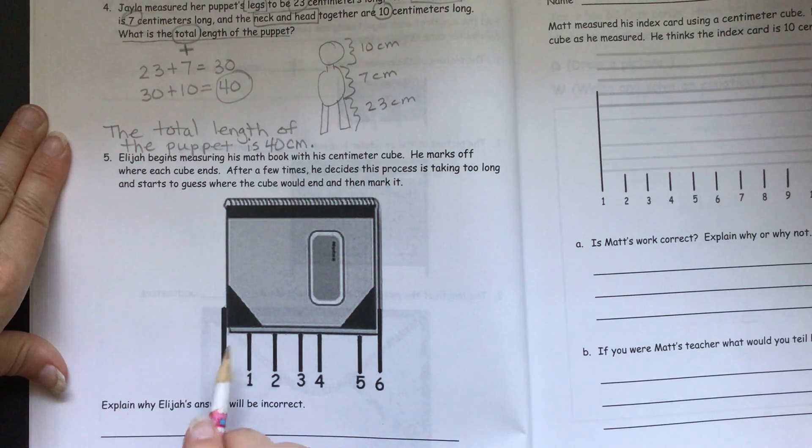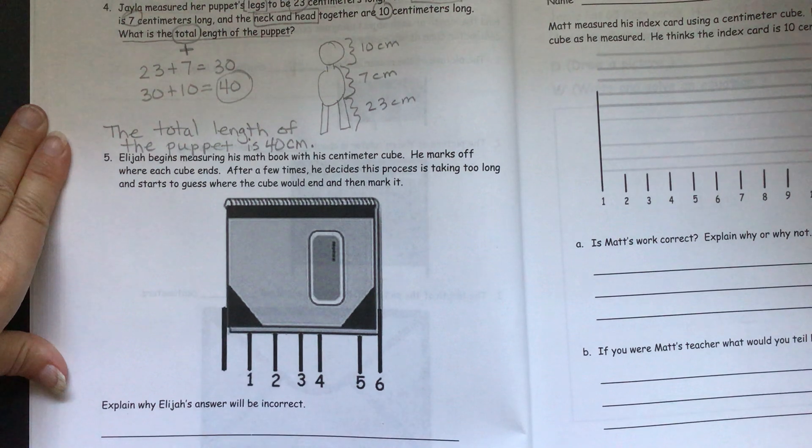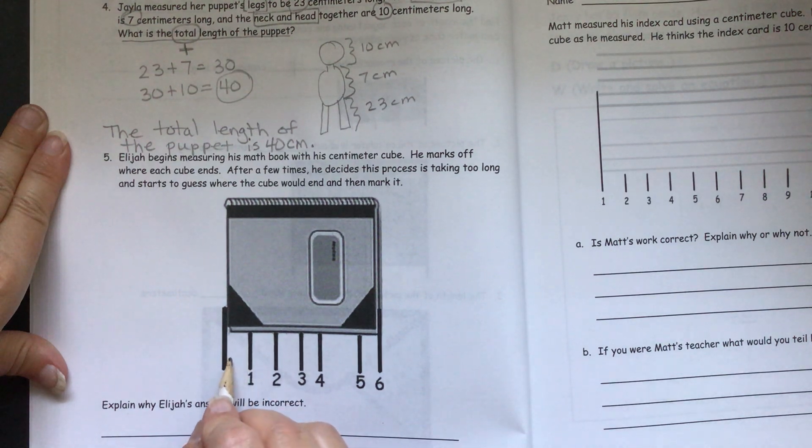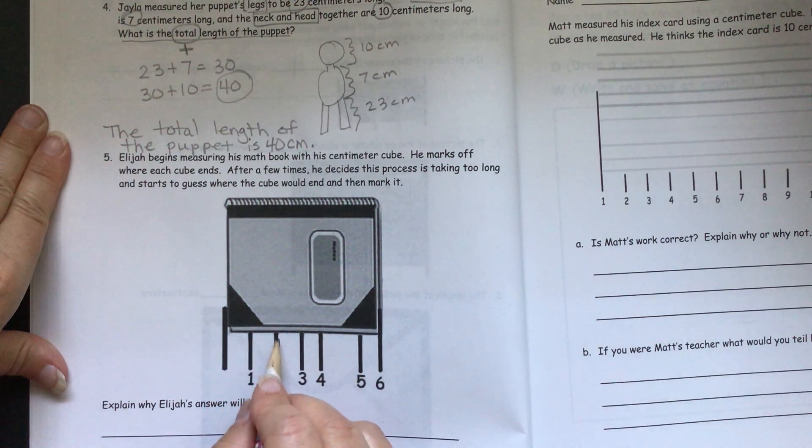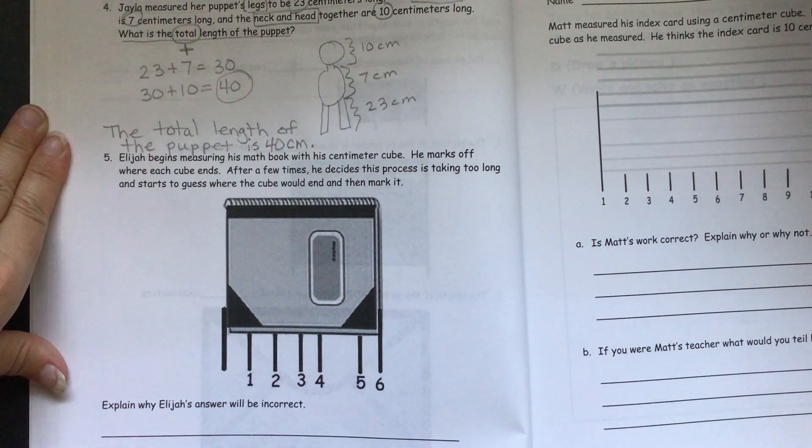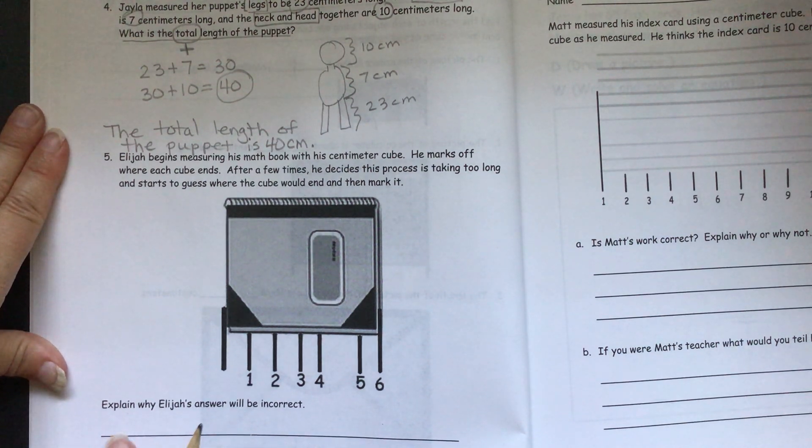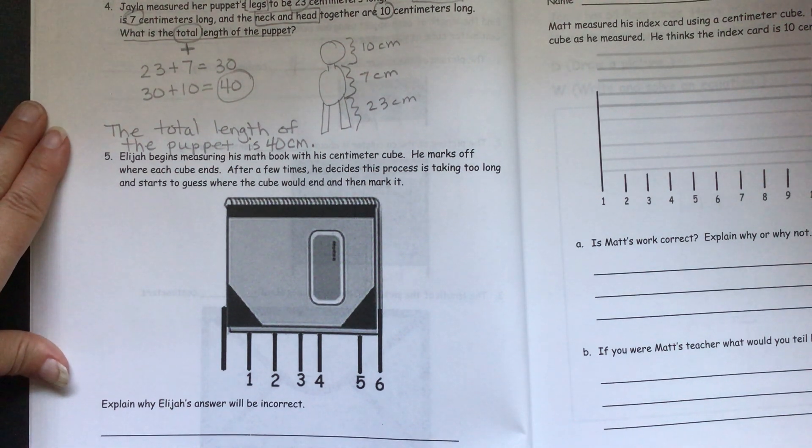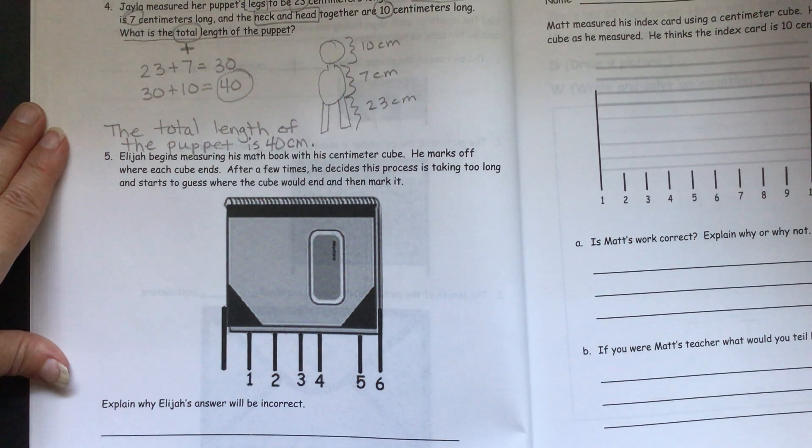So you need to explain why Elijah's answer would be incorrect. Because remember, you're supposed to line it up and mark it. Even if you're getting tired of doing it, you still need to stick with it and put your cube there, mark it off, put your cube there, mark it off. Because you can see, he didn't make the same spaces. So you should be thinking about how you can word that. He was not correct because he doesn't have the same amount of space between each one of them.